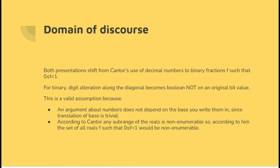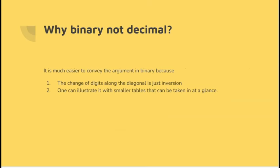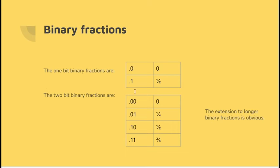And why are we using binary? Well, as I say, changing the digits becomes simple. And you can also illustrate the whole thing in a lecture with very simple tables. What are the binary fractions? Well, there are two 1-bit binary fractions, 0.0 and 0.1, which mean 0 and 0.5. There are four 2-bit binary fractions. 0.0 is 0, 0.1 is 0.25, 1.0 is 0.5, 1.1 is 0.75, etc.